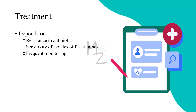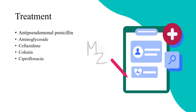Treatment is dependent on the resistance of Pseudomonas aeruginosa to antibiotics, sensitivity of its isolates, and frequent monitoring. The treatment of choice is an anti-pseudomonas penicillin — for example, piperacillin-tazobactam or ticarcillin-clavulanate — plus an aminoglycoside such as gentamicin or amikacin. Ceftazidime is also effective. For highly resistant strains, colistin (polymyxin AE) is useful. The drug of choice for urinary tract infections is ciprofloxacin.